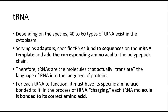Depending on the species, there are 40 to 60 types of transfer RNA in the cytoplasm. They serve as adapters — specific tRNAs bind to sequences on the mRNA template and add the corresponding amino acid to the polypeptide chain. Therefore, tRNAs are the molecules that actually translate the language of RNA into the language of proteins. In the process called tRNA charging, each tRNA molecule gets bonded to its correct amino acid. The tRNA must be carrying that amino acid, then join up with the large subunit, which is bound to the small subunit, which is bound to the mRNA. The mRNA and tRNA match up, and the amino acid chain is built.